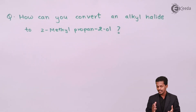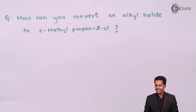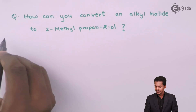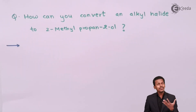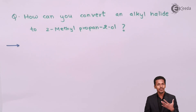Question 1: How can you convert an alkyl halide to 2-methylpropan-2-ol? The product is an alcohol, and we need to obtain it from an alkyl halide whose alkyl group matches this product. We know different methods: using moist silver hydroxide or aqueous KOH solution. Let us carry out this reaction using aqueous KOH solution.